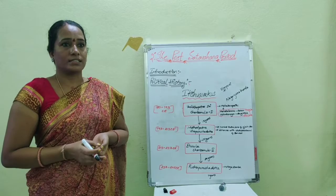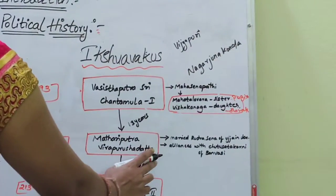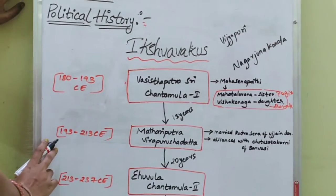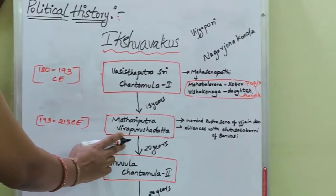Shantamula I was succeeded by Mahathari Kutpa Veera Purushadatta, period 193-213 CE, around 20 years.